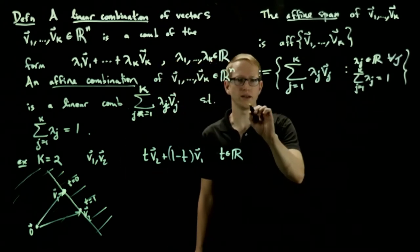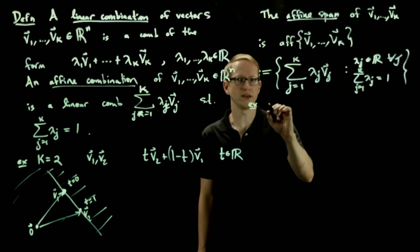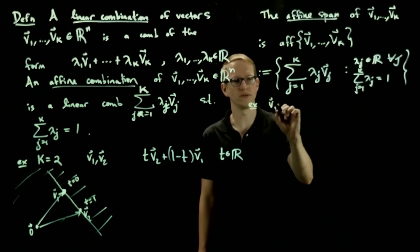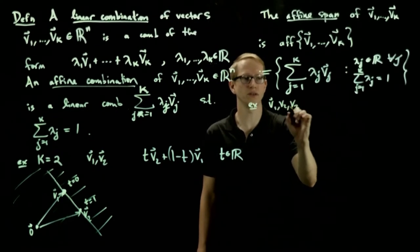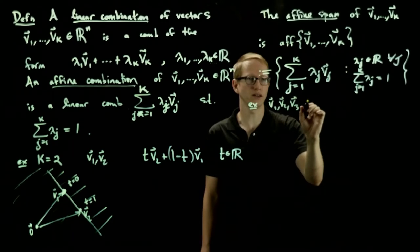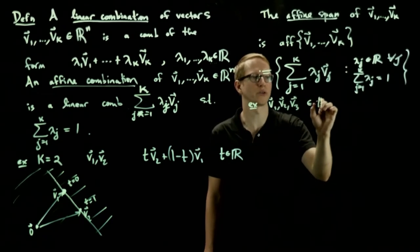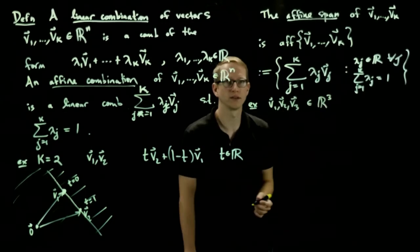So let's look at another example where we take three vectors. So let's say v1, v2, v3, and let's just be concrete, and let's say we're in R3 so that we can visualize this a little bit better.